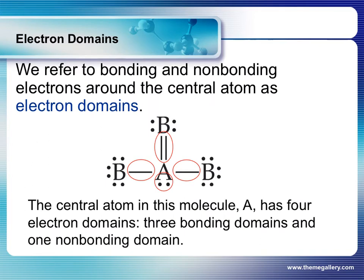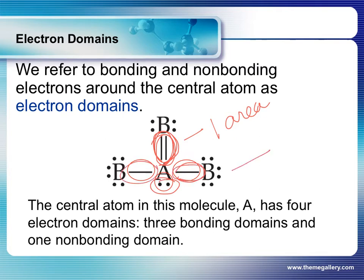The first thing you're going to need to do is count the areas of electron density around a central atom. A double or a triple bond is one area — you don't want to count the two bonds in a double bond separately. A lone pair is one area. So a bond, whether it's single, double, or triple, counts as one area. This particular compound has four areas of electron density around it.